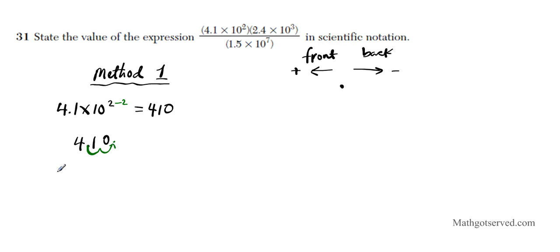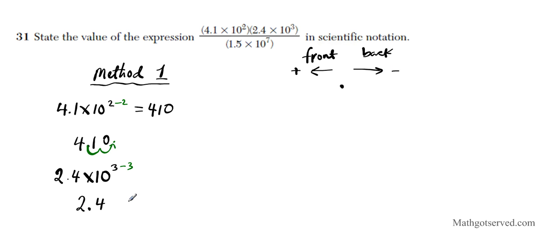Now let's apply the same principle to 2.4 times 10 to the third. I need to subtract 3 from this power, which is the same as dividing by 1,000. That moves the decimal point in 2.4 three places to the right, and we insert two zeros. So 2.4 times 10 to the third is the same thing as 2,400.